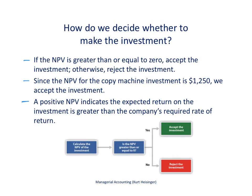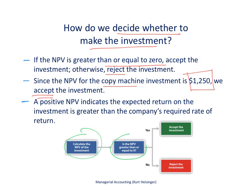The last part of step three is to decide whether to make the investment. If the net present value is greater than or equal to zero, we accept the investment; otherwise, we reject it. Since this proposed investment to purchase the copy machine has a net present value of positive $1,250, we accept it. A positive net present value indicates that the expected return on this investment is greater than our company's required rate of return of 10%.